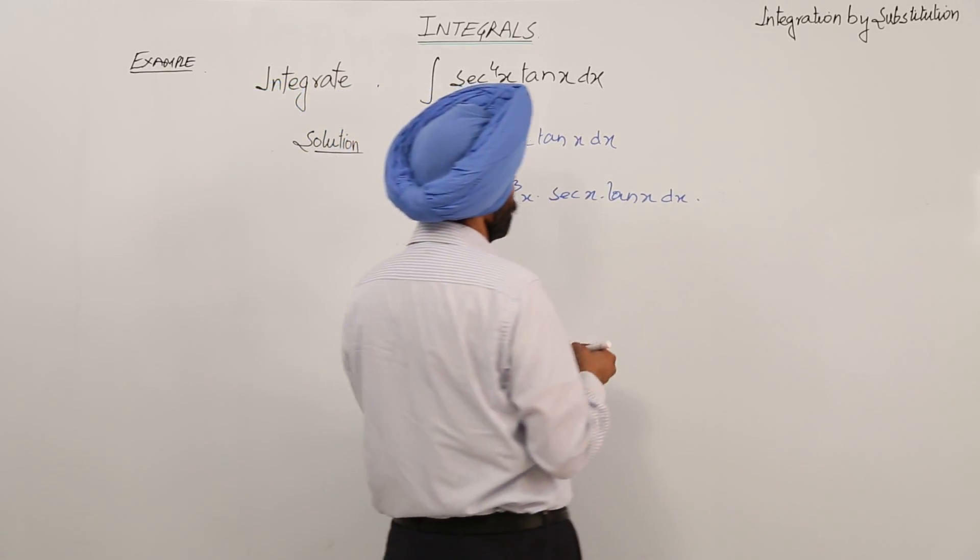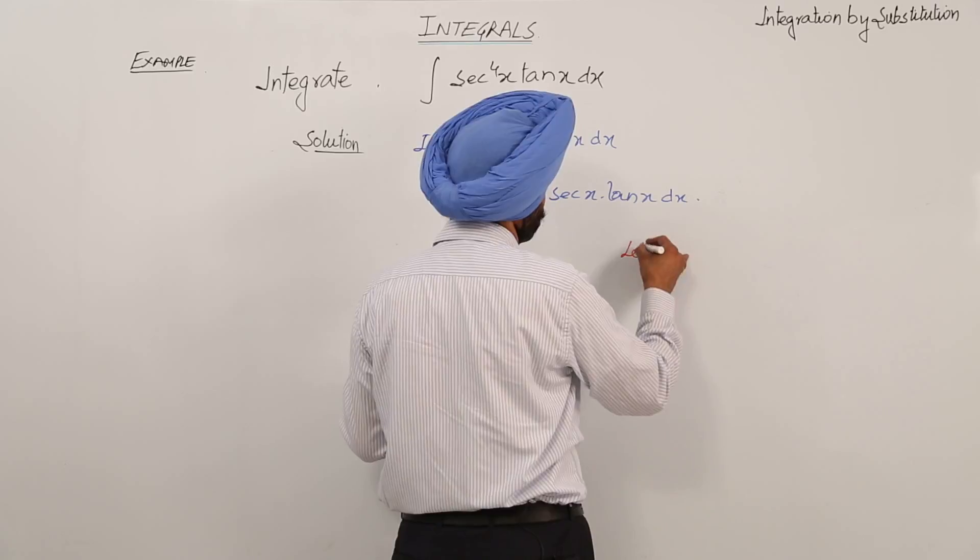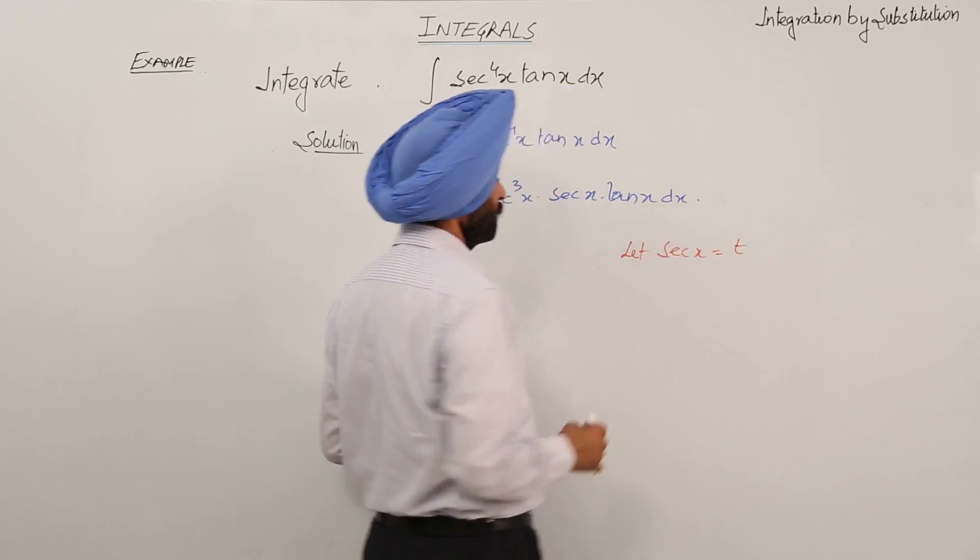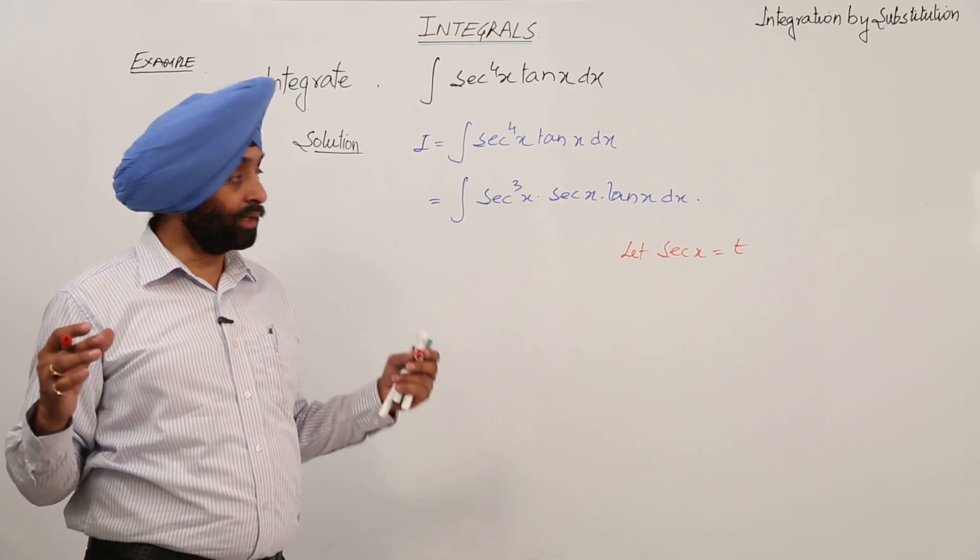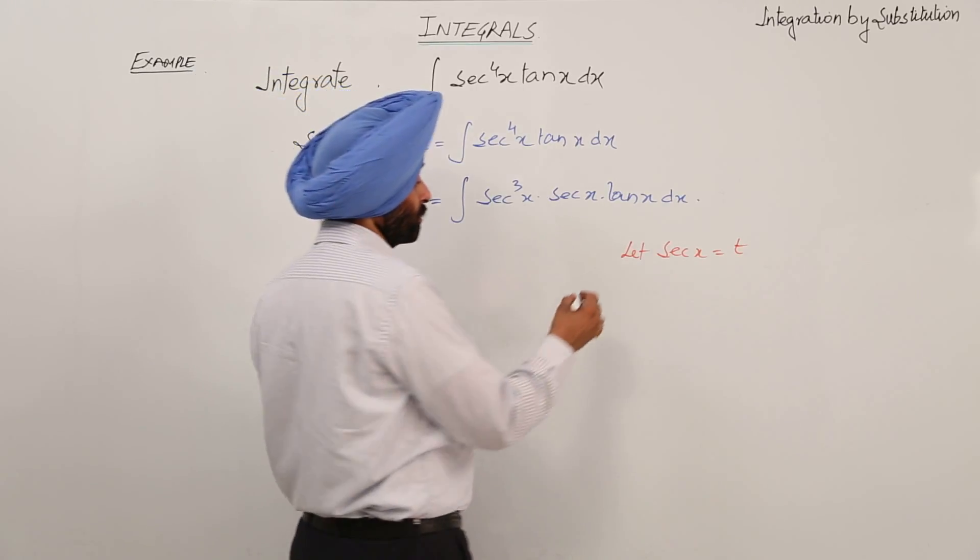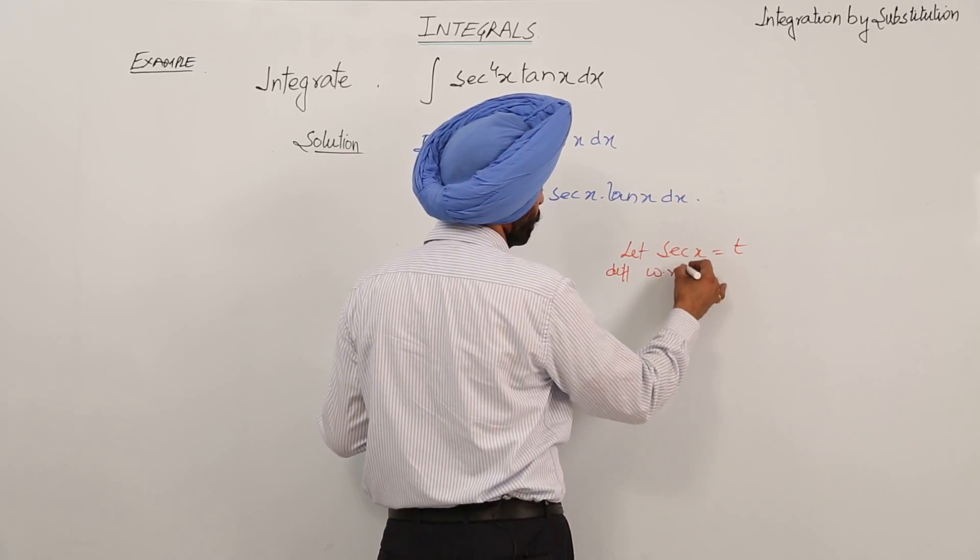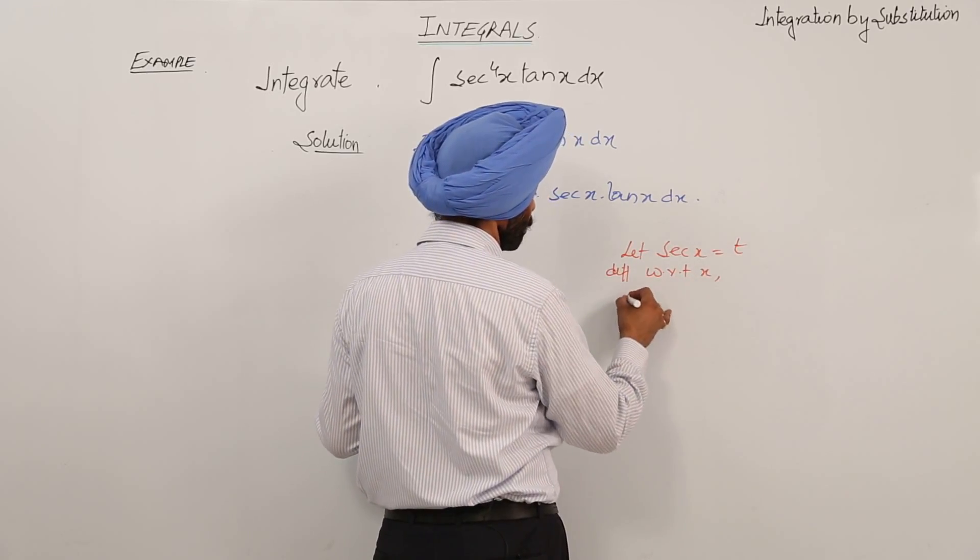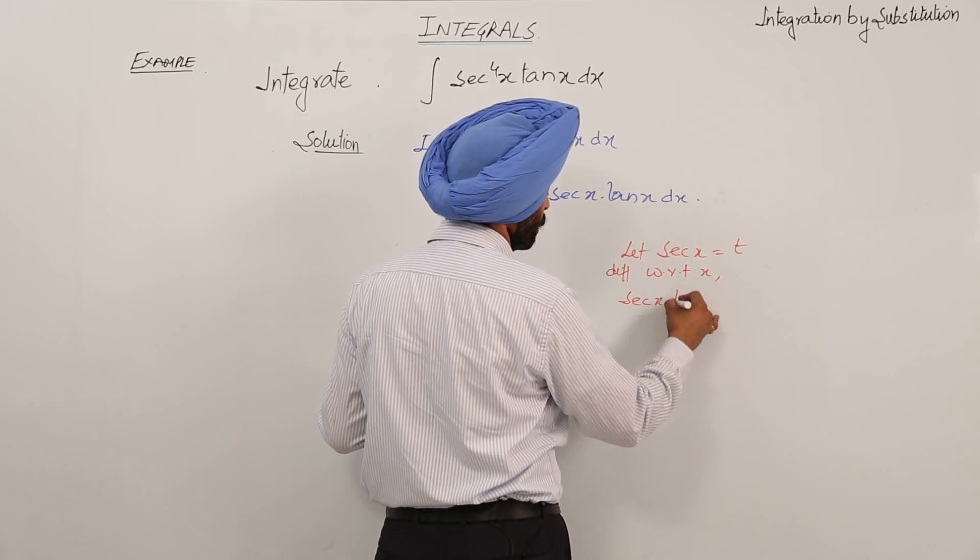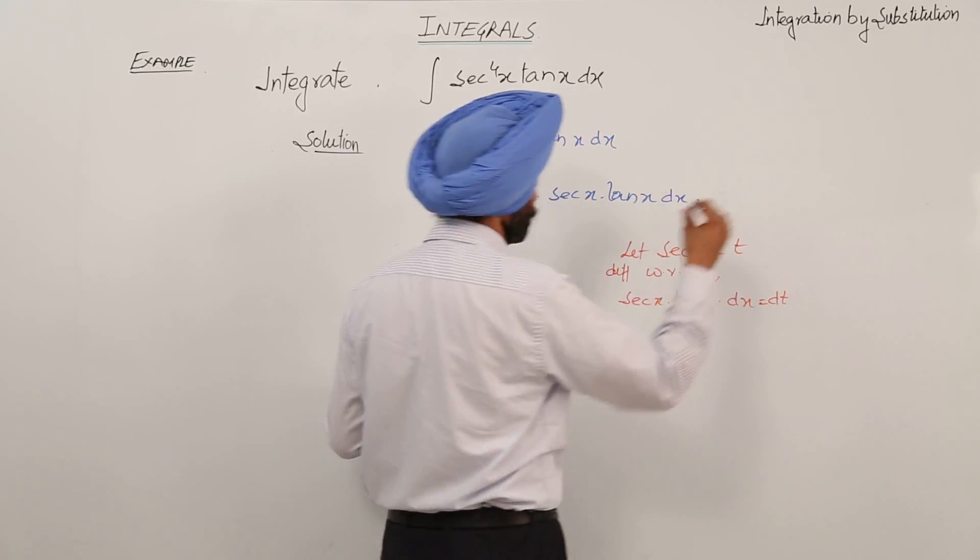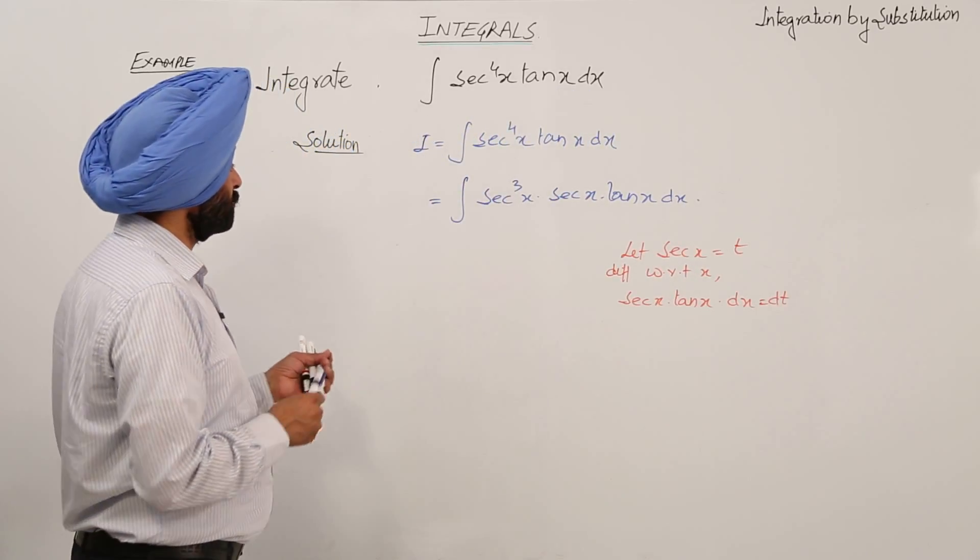Now let secant x equal to t. Now we know that derivative of secant x, differentiating with respect to x, secant x tan x dx is equal to dt.